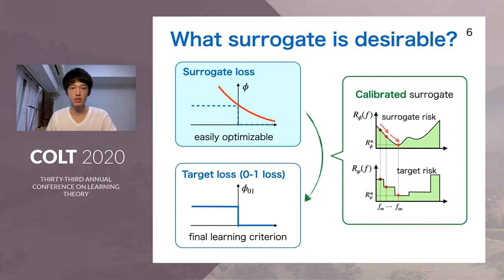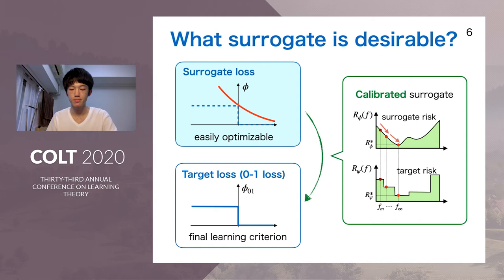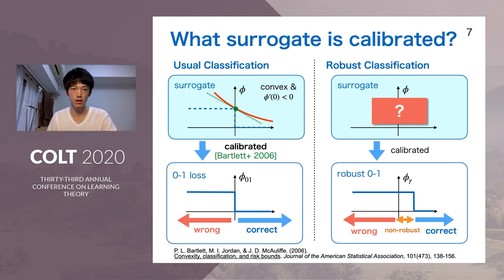This is where the important notion of calibrated surrogate losses comes in. We say a surrogate loss is calibrated to the target zero-one loss if minimizing the surrogate risk — the expectation of the surrogate loss — implies minimizing the target risk. This is the desirable property we require of surrogate losses. One famous result by Bartlett et al. states that if a loss function is convex and has a negative gradient at the origin, then it is calibrated to zero-one loss. This is why we typically use logistic loss or hinge loss in binary classification.